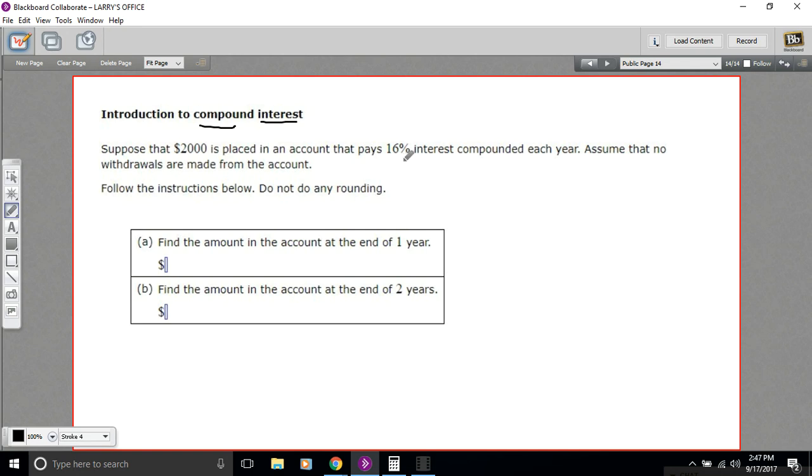It says that suppose $2000 is placed in an account that pays 16% interest. Wow, that's a high interest rate! Each year, compounded each year. Assume that no withdrawals are made from the account. Follow the instructions below. Do not do any rounding. First, find the amount in the account at the end of one year.